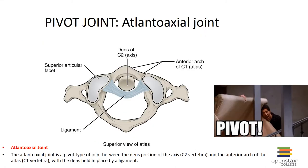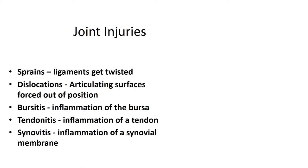Here you can see an example of a pivot joint as discussed earlier. There are various types of joint injuries to be familiar with. We already discussed dislocations, but sprains are another common joint injury, where you stretch or tear a ligament across the joint capsule.